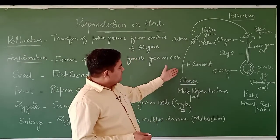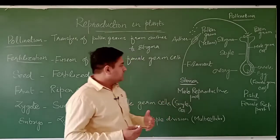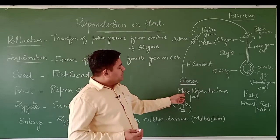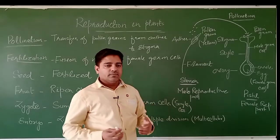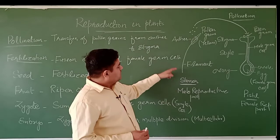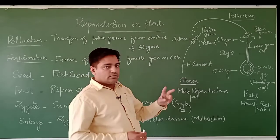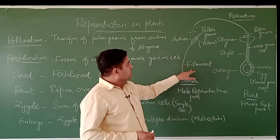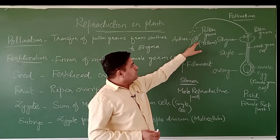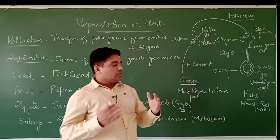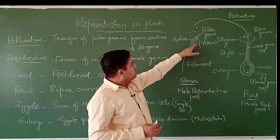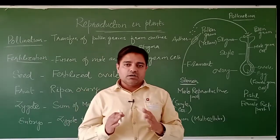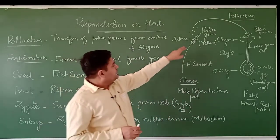As we discussed in the earlier video lecture, the male reproductive part of a flower is known as the stamen. Stamen has two parts: the filament, which is the tubular structure, and the swollen, cyclic structure known as the anther.